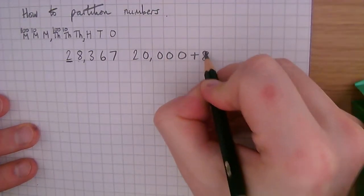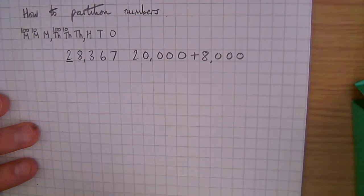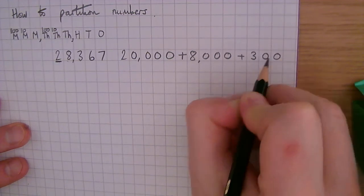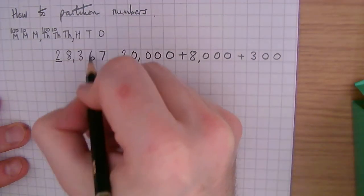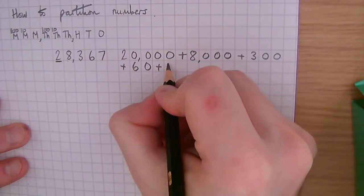And then we've got three hundred, and six tens is 60, and seven ones.